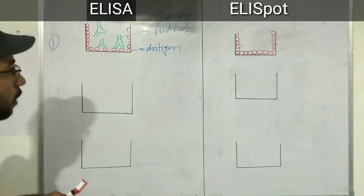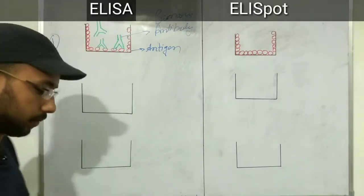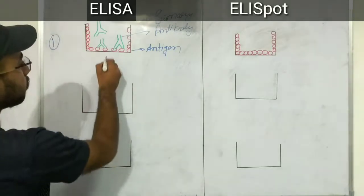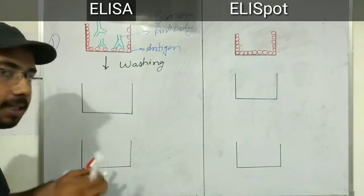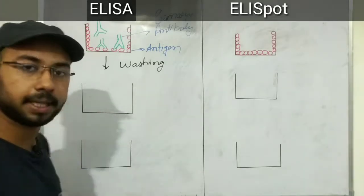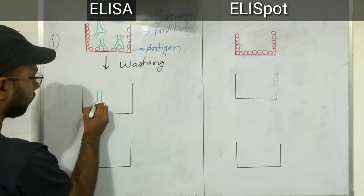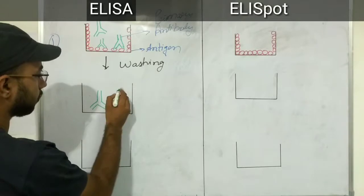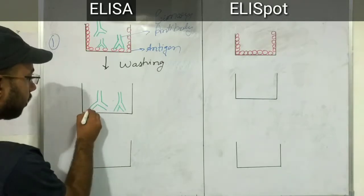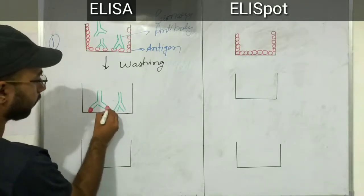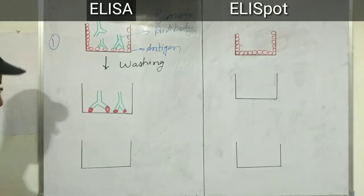In the second step, we wash the container so that the unbound antigens and antibodies are washed away. This washing step leaves the antigen-antibody complex in place. The antigen is bound to the primary antibody, forming the antigen-antibody complex.